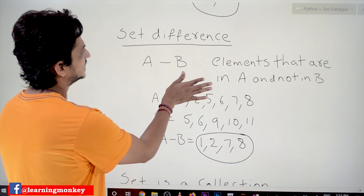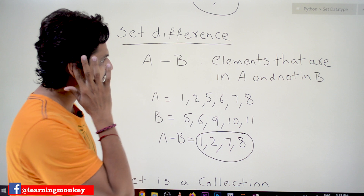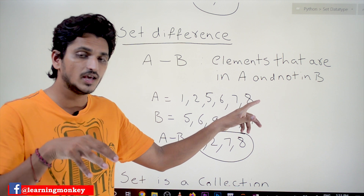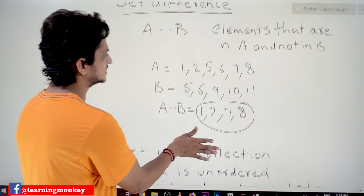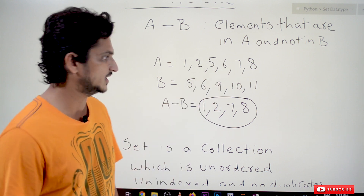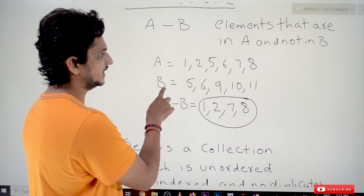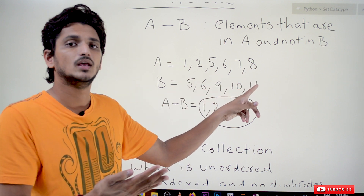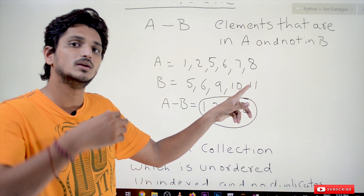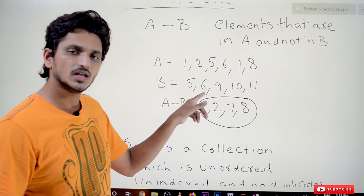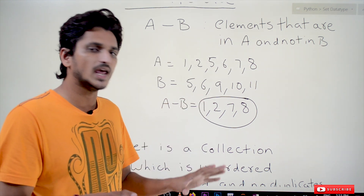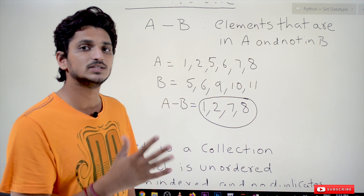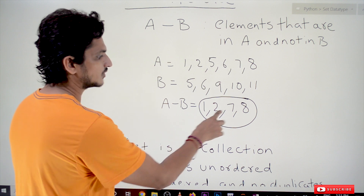Now, set difference: a minus b gives elements that are in a and not in b. From set a — {1, 2, 5, 6, 7, 8} — we remove 5 and 6 which are present in b, leaving 1, 2, 7, 8. So a minus b equals {1, 2, 7, 8}.